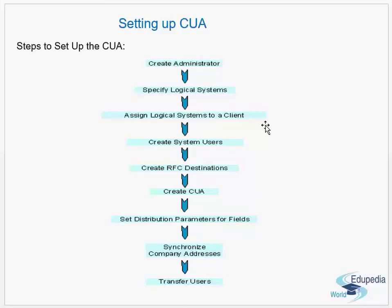Further steps include: synchronize company addressing, and transfer users. CUA works on an ALE mechanism. The data is transmitted from the central system to the child system using ALE. You define logical systems, RFC destinations, and the users to be used in those RFC destinations. Then you create the central user administration, set distribution parameters, synchronize company addresses, and transfer the users.